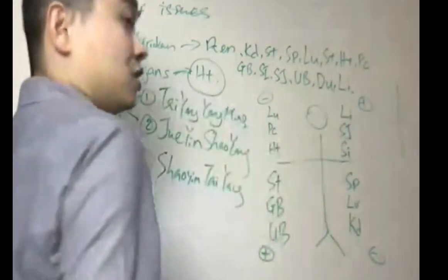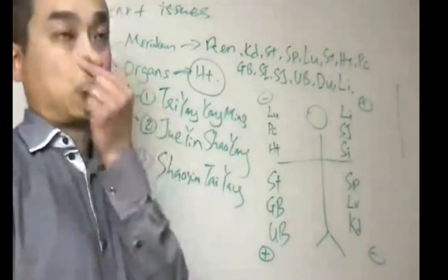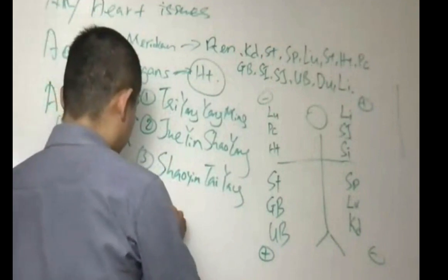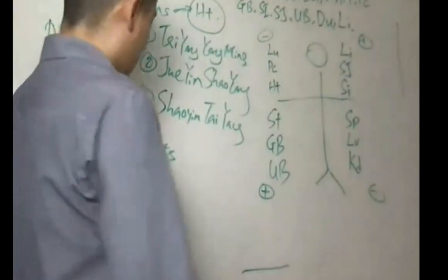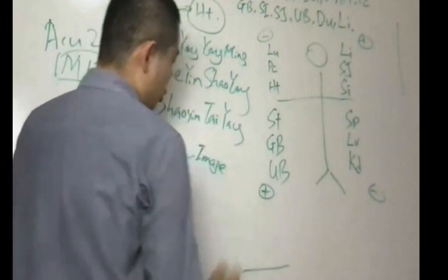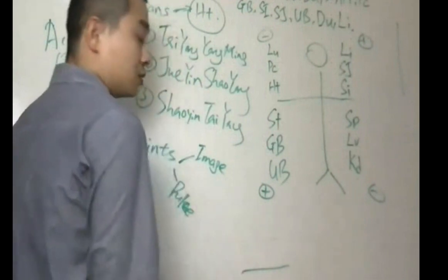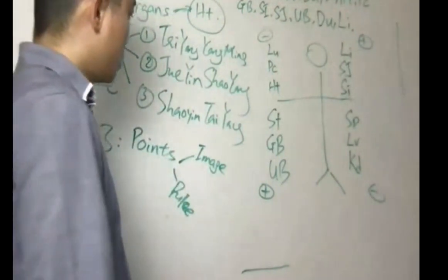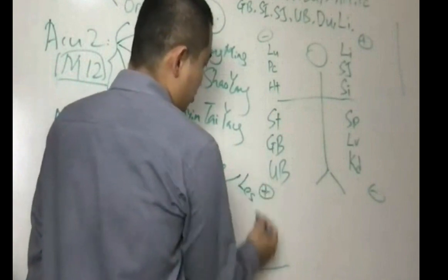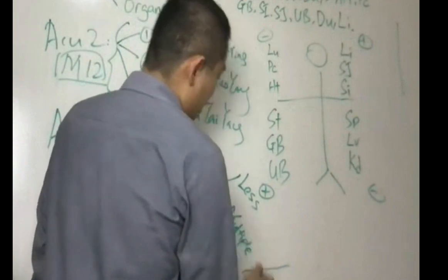Now Acupuncture Three. In Acupuncture Three, we're talking about points. We can use image to choose the point. We can use pulse diagnosis to get to the points. With the image, you can use less needle principle or multiple needle principle.